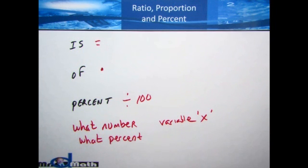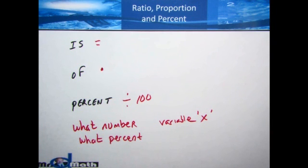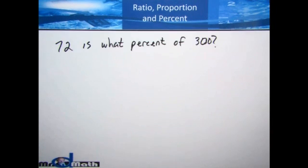Now let's take a look at some word problems. All we need to know for this is: 'is' means equal to, 'of' means multiply, and 'percent' means divide by 100. Let's check out some word problems.